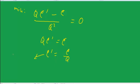c' is by definition marginal cost, c over q is by definition average cost. Q.E.D., marginal cost equals average cost when we've minimized average cost.